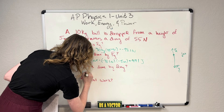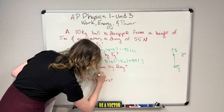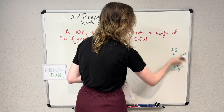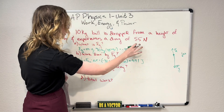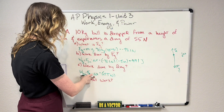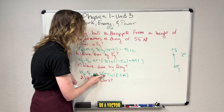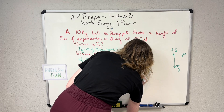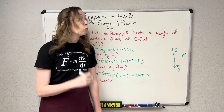Now what about the work done by drag? The work done by the force of drag is equal to the component of drag that is parallel to our displacement times our displacement delta x. Our force due to drag is pointing straight up and our displacement is straight down, so the component parallel to displacement is just our full drag force — positive 55 newtons. Our displacement is the same: negative 5 meters. So positive 55 newtons times negative 5 meters gives us negative 275 joules.